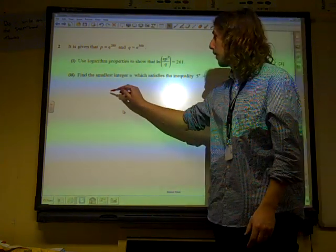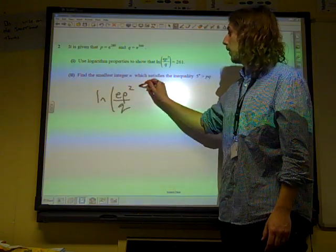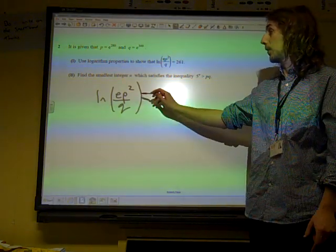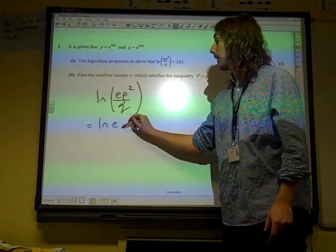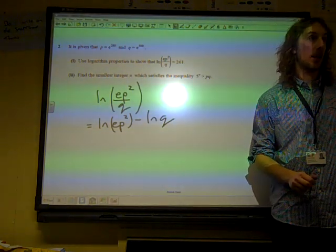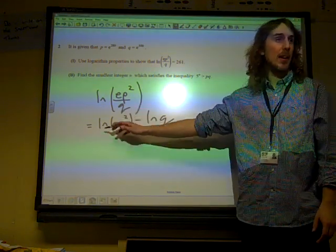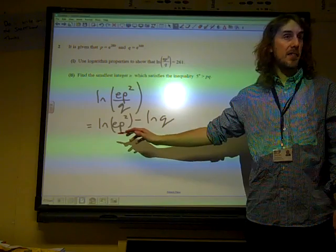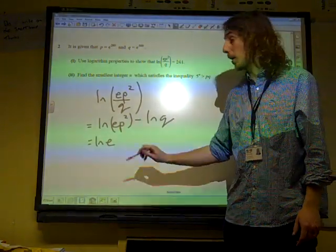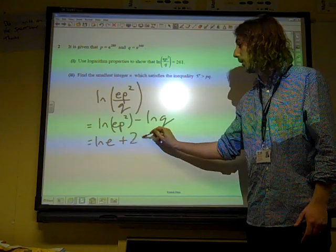Now we need to be demonstrating some knowledge of our laws of logarithms. A good place to start might be saying that this is the same as ln(E*P²) minus natural log of Q. So that would be a good start and that would probably get you a mark out of this. If we then look at what we've got going on here, this is natural log of E plus the natural log of P squared. Now the natural log of P squared I'm going to write is 2 natural log of P.